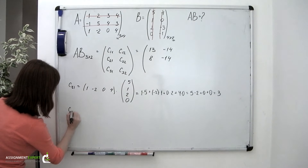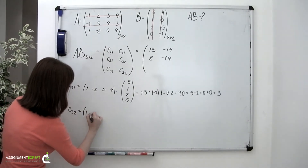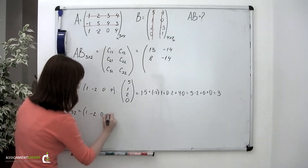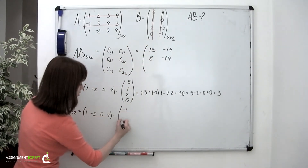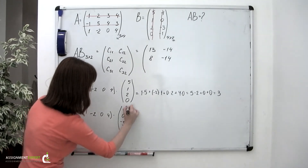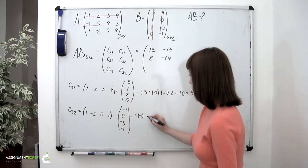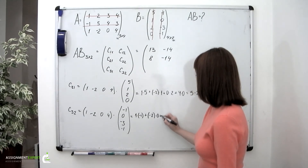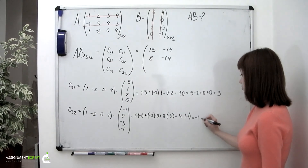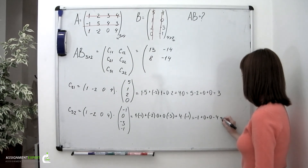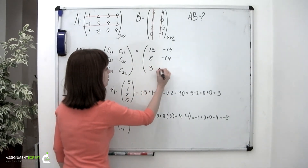And the last element, C sub 3,2, is the third row — 1, negative 2, 0, and 4 — multiplied by the second column of the second matrix, which is negative 1, 0, negative 3, and negative 1. That equals 1 times negative 1, plus negative 2 times 0, plus 0 times negative 3, plus 4 times negative 1, which is negative 1 plus 0 plus 0 minus 4, which equals negative 5. So we have 3 and negative 5 for the last row.